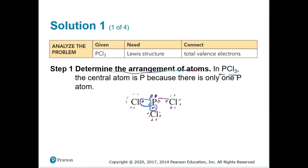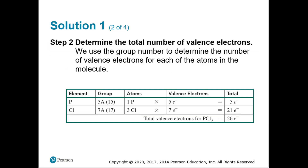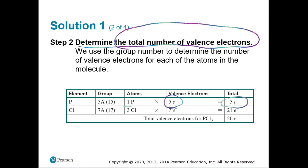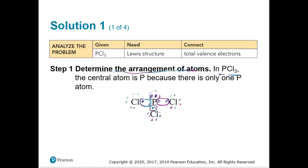It's important to verify we have the right total number of valence electrons. Phosphorus has five valence electrons and there's one phosphorus, so that's five. Three chlorines each have seven, giving 21. Adding them up, there should be 26 total electrons. Counting the electrons in the drawing around phosphorus — including all shared ones from chlorines — gives us eight.